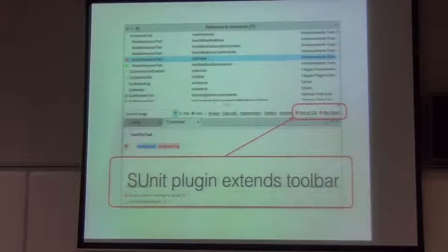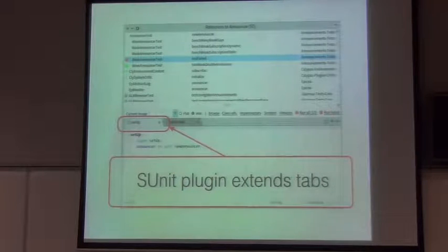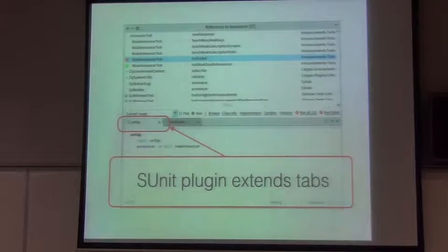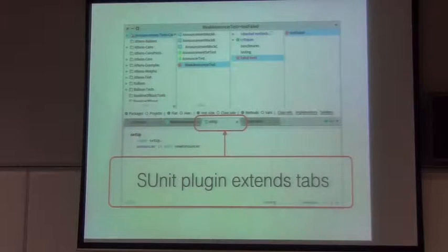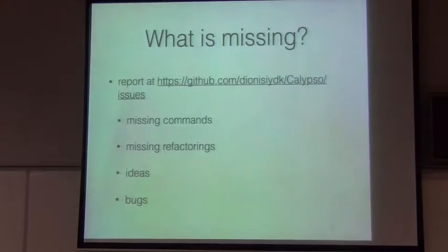There is a unit plugin which extends the toolbar of the method browser to run all tests available in the method list. It shows all failed tests and makes it possible to run all of them. The unit plugin also extends the browser with an extra tab showing the setUp method, so you can see in what environment the tests are working. If there is no special setUp in the class, it shows just the superclass setUp method, which you can edit directly. There is also a special group of failed tests — as soon as tests fail, this group appears and you can browse all failed tests together.